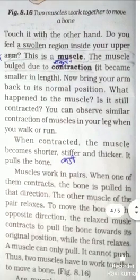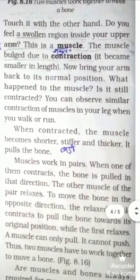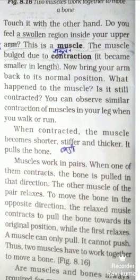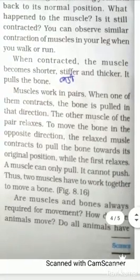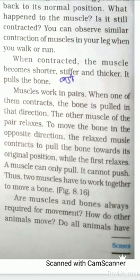You can observe similar contraction of muscle in your leg when you walk or run — आप ऐसा observe कर सकते हैं अपने पैरों की muscles में। When contracted, the muscles become shorter, stiffer, and thicker — बहुत कड़ा और मोटा हो जाता है। It pulls the bone — यह bone को खींचता है।